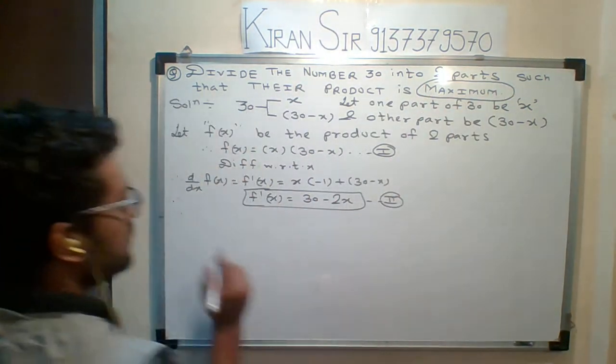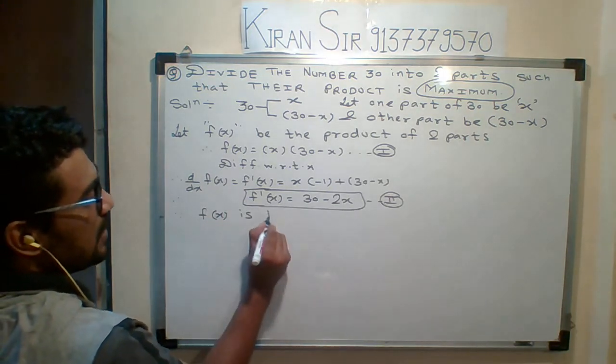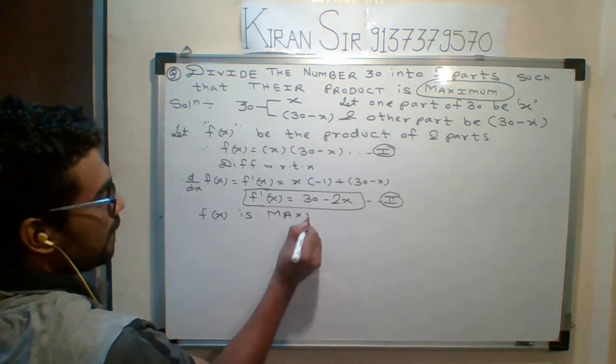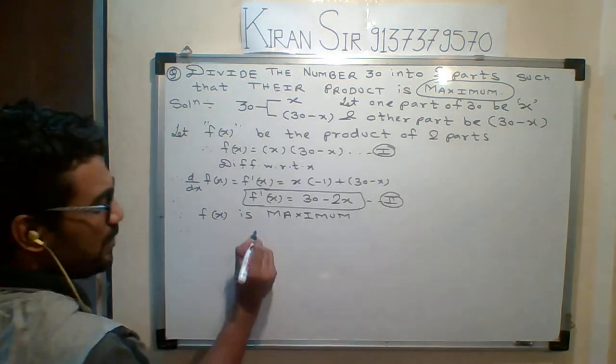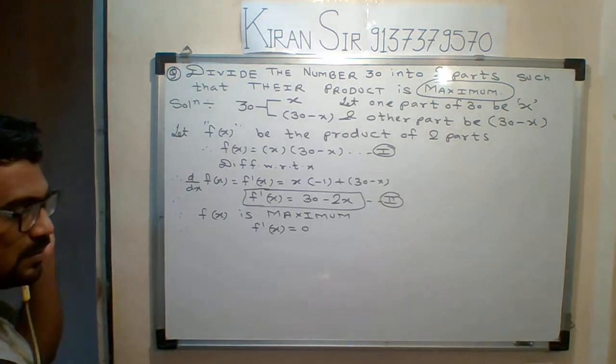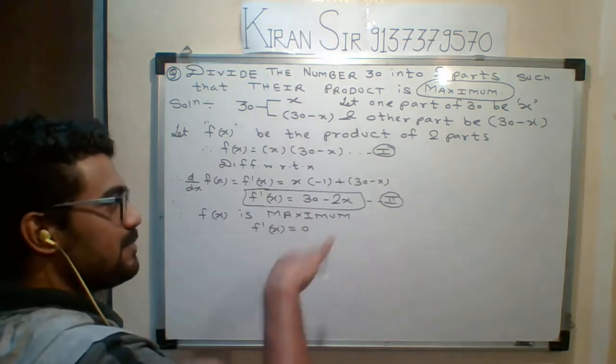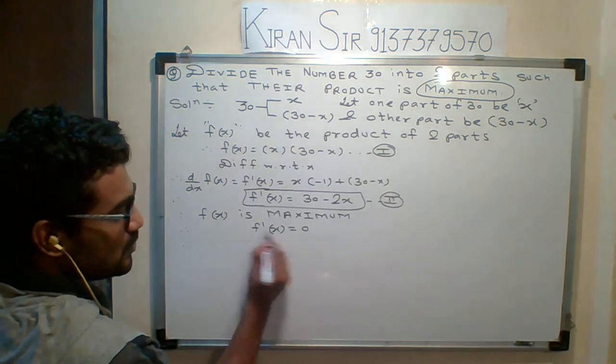What is the condition here? Maximum. So here we will write: since f(x) is maximum, what is the condition for maximum minimum? f'(x) is always equal to 0. It is not increasing or decreasing, students. This is maximum minimum, so condition for maximum, first condition is: derivative should be 0.